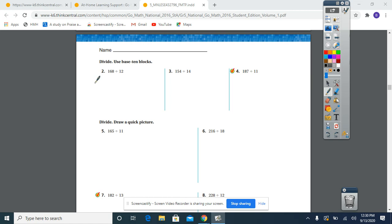So I'm going to look at number two first. On number two, I have 168 that is being divided by 12. The number that is being divided or split up is the number that goes inside what I call the doghouse. It goes underneath the division bar.